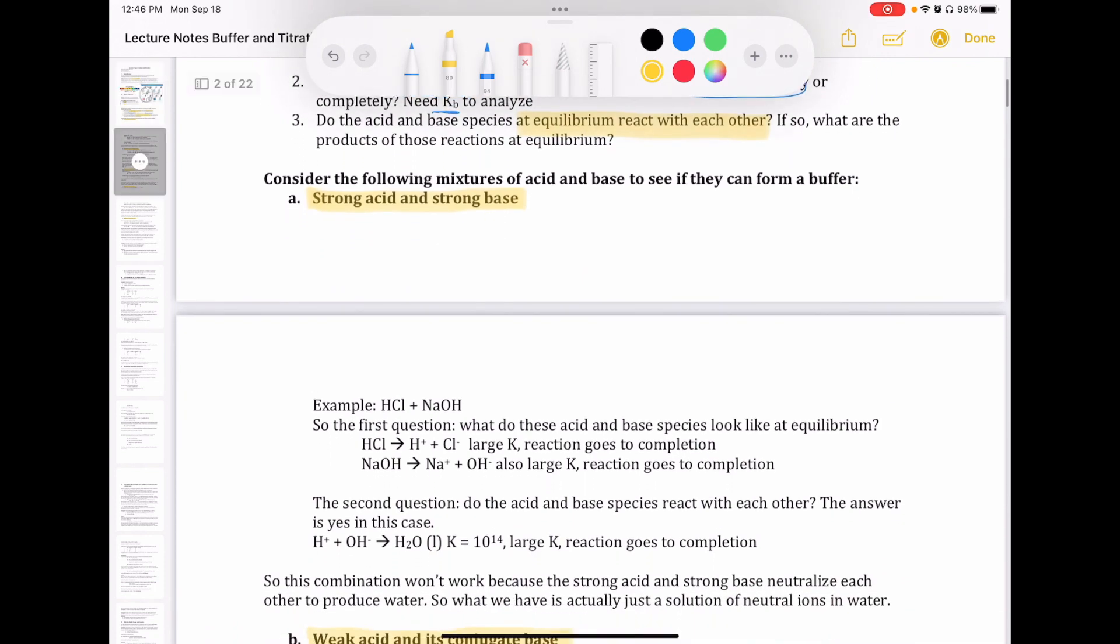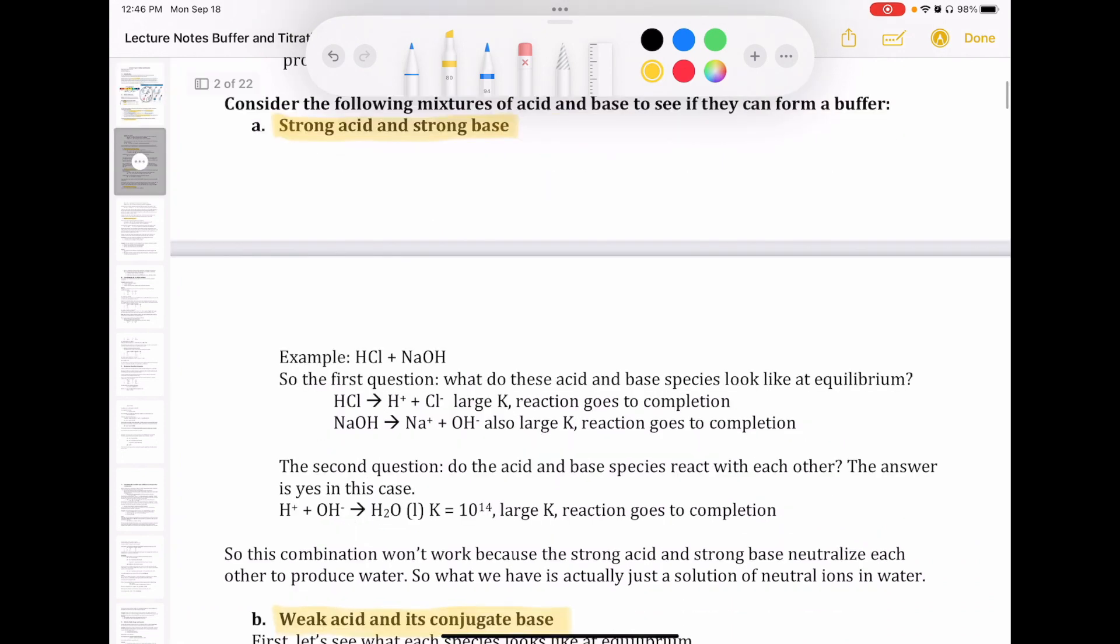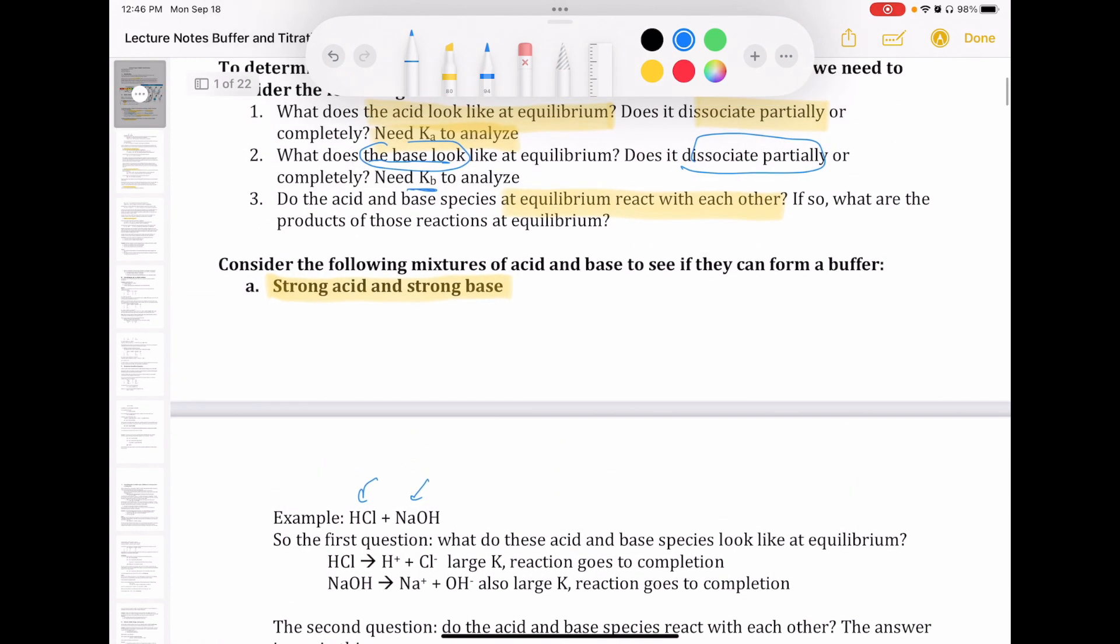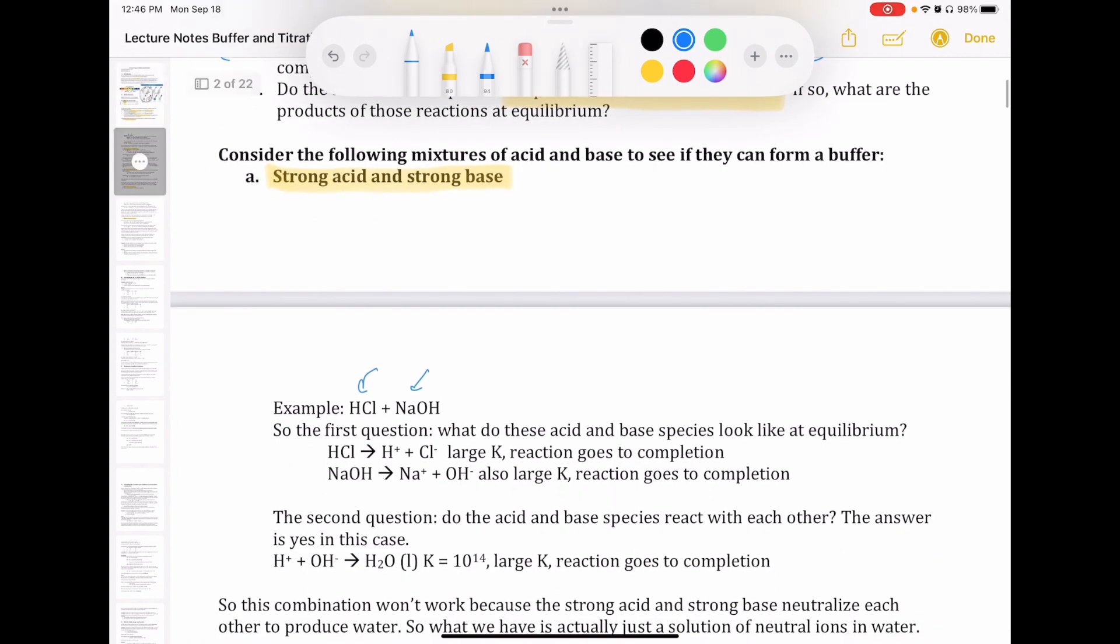So we're going to start our discussion, and keeping in mind those three points I just mentioned, with the strong acid and strong base combination. So for example, let's pick our stereotypical strong acid, which is HCl, and stereotypical strong base, which is NaOH. The first question we ask is these two questions right here about the acid and the base, which is what do they look like at equilibrium? If I just take HCl and I place it in water, what is it going to look like?